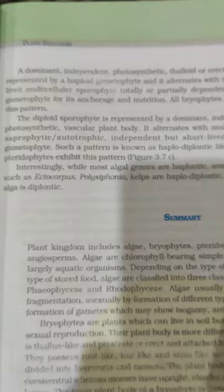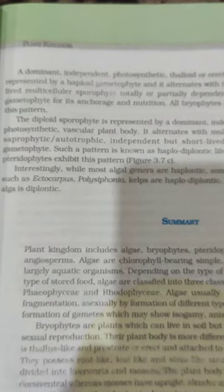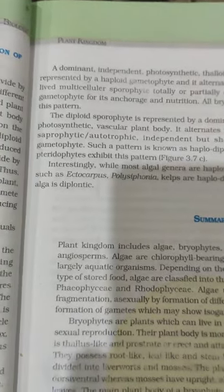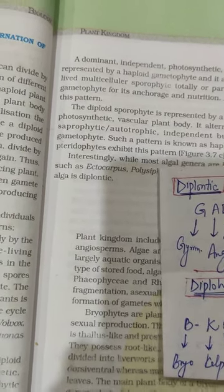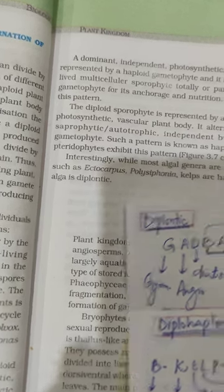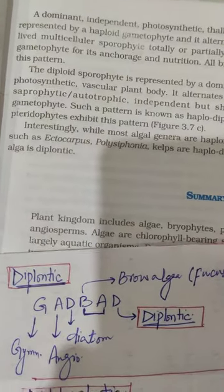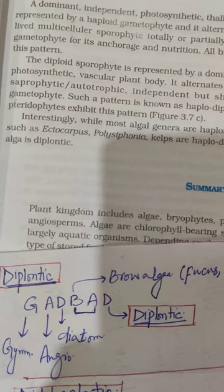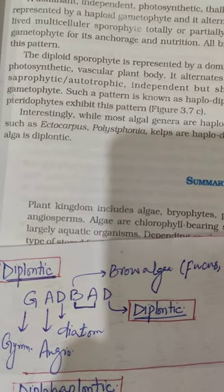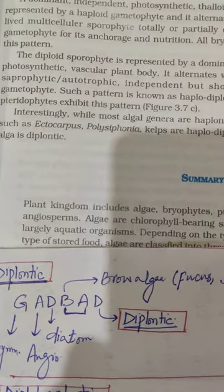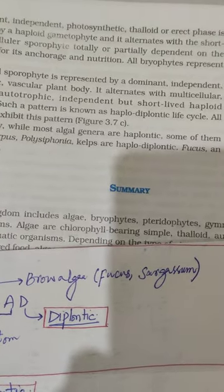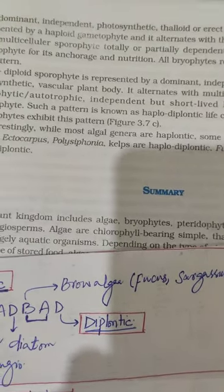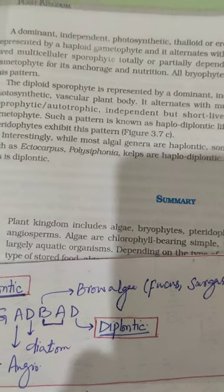The diplontic life cycle is shown by gymnosperms, angiosperms, diatoms, brown algae, Fucus and Laminaria. These can be remembered by the trick 'GAD B': G relates to gymnosperm, A to angiosperm, D to diatom, and B to brown algae including Fucus and Sargassum. D also stands for diplontic life cycle.